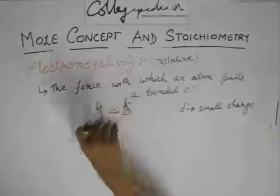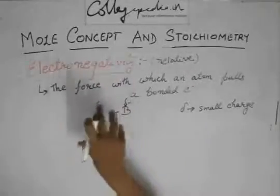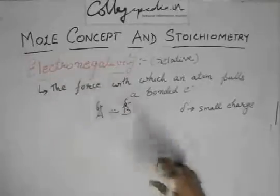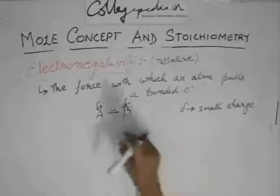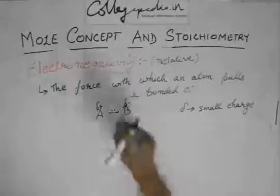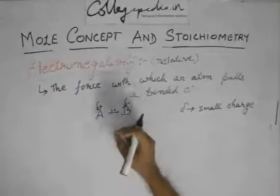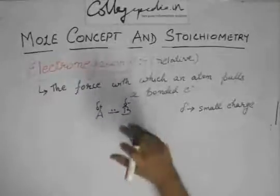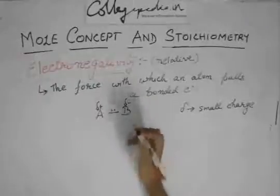And since the electrons are pulled away from A, there will be a sort of a positive atmosphere around A. So this delta negative and delta positive are not actually the charges on B and A, but they are kind of pseudo charges, they are just an atmosphere of charge.